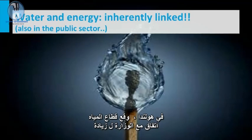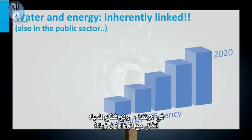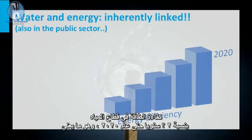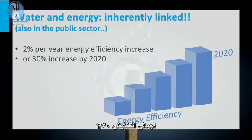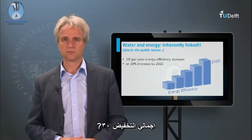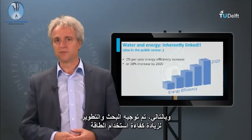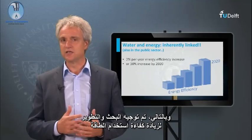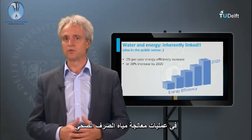In the Netherlands, the water sector has signed an agreement with the Ministry to increase energy efficiency in the water sector by 2% per year until 2020, which means a total reduction of 30%. Therefore, present research and development is oriented to increase the energy efficiency in sewage treatment processes.